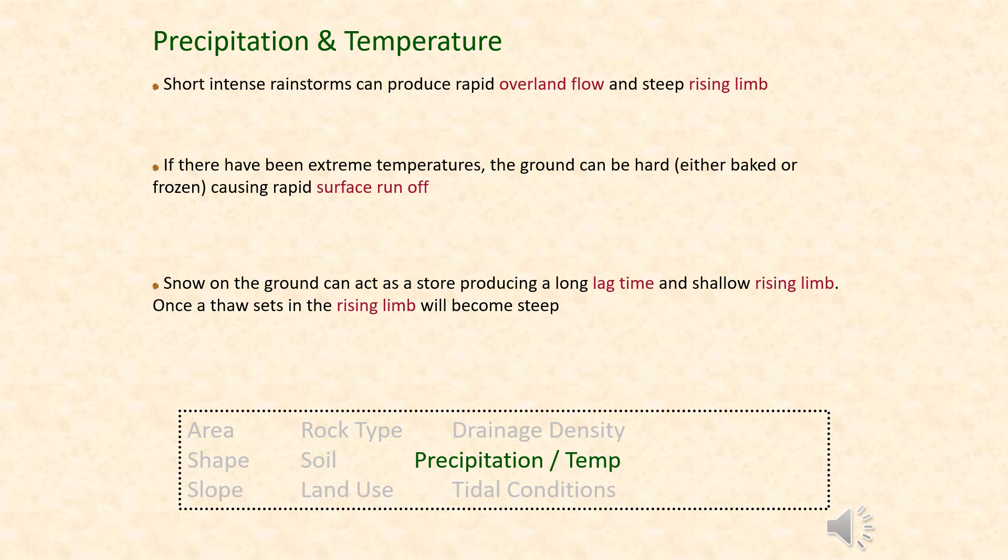Precipitation is relatively straightforward on the surface — the more water we have, the more likely a river is to flood. Short, intense rainstorms can produce a lot of rapid overland flow and are therefore more likely to cause river flooding. However, long periods of continuous rainfall can also saturate soils and potentially cause flooding much later — it's just not as sudden.